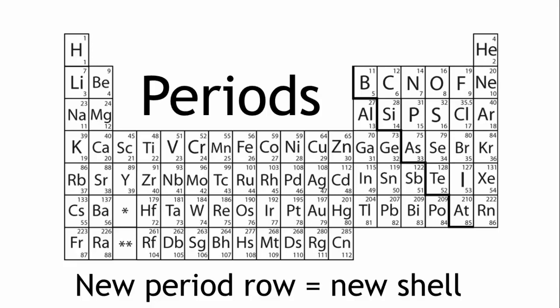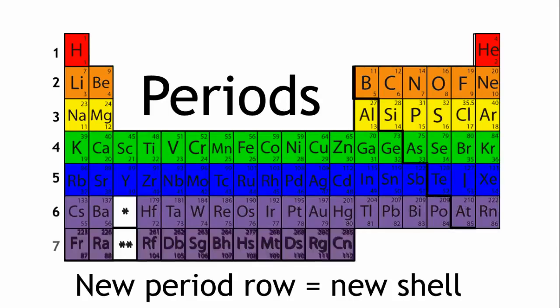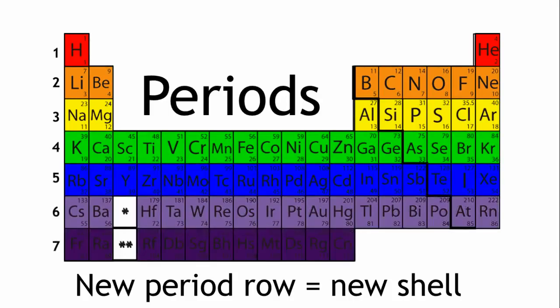Elements in the first period have one shell, and as we go down, the shells increase. Hydrogen is in the first period. It has one shell.